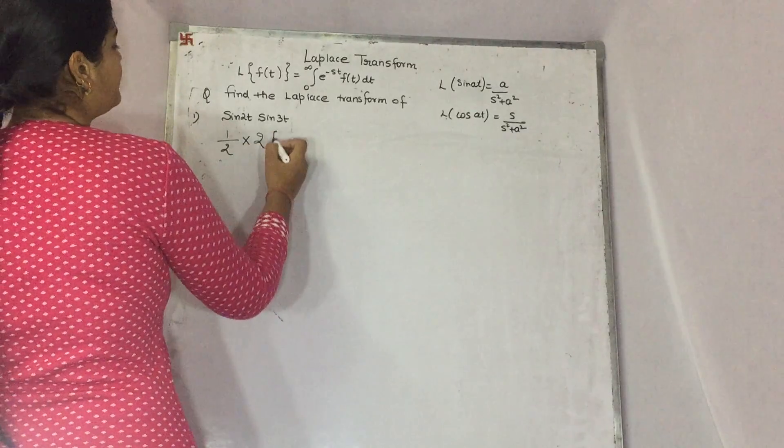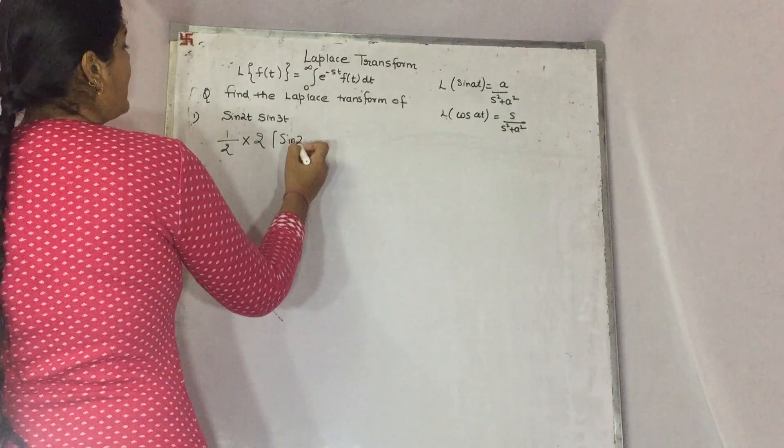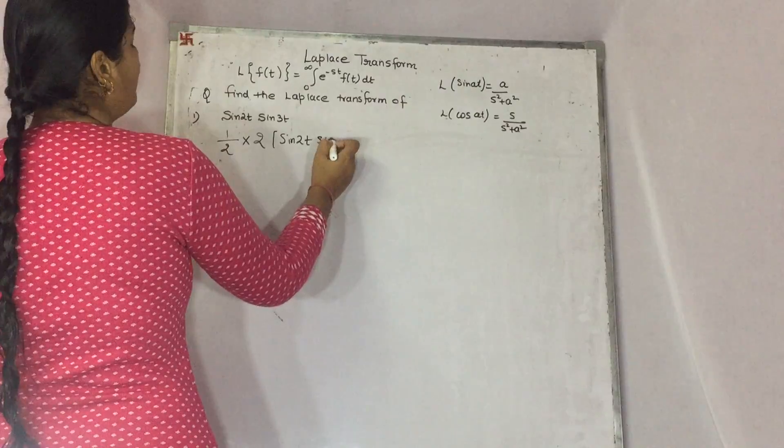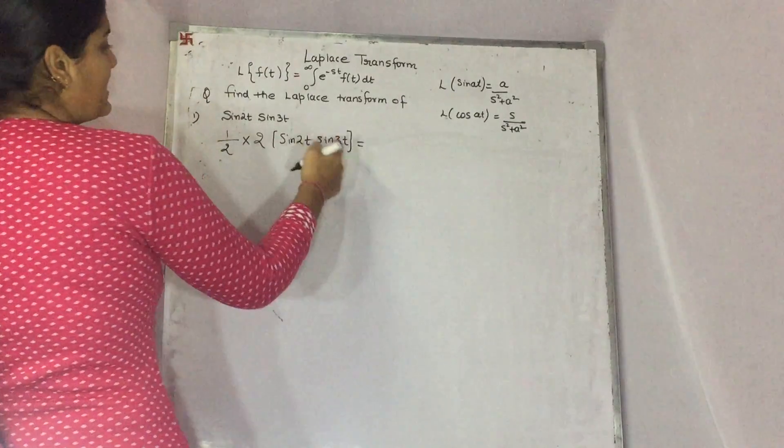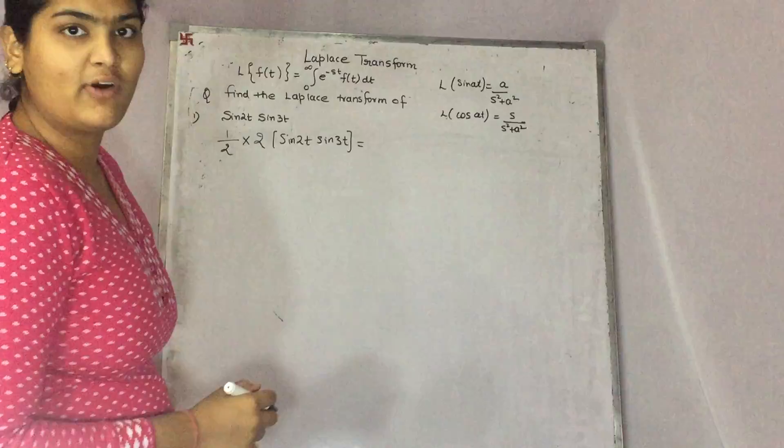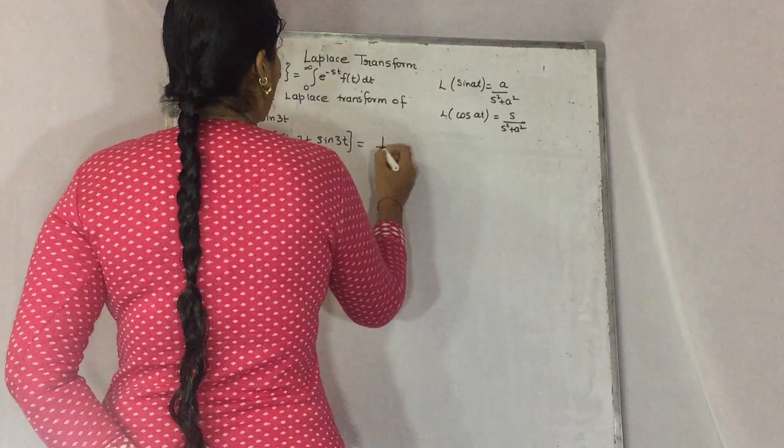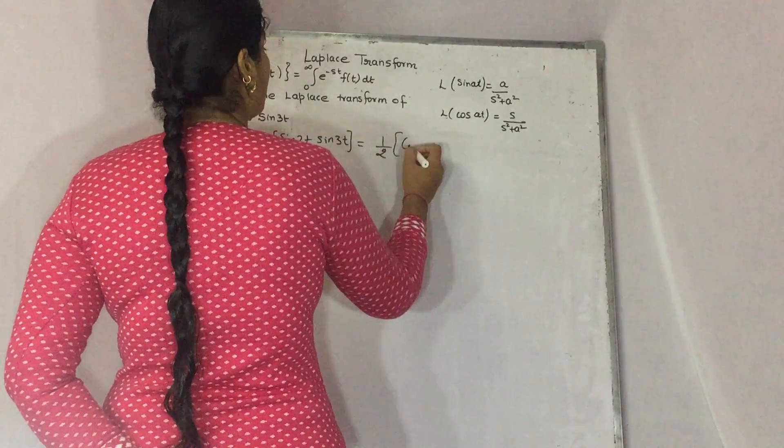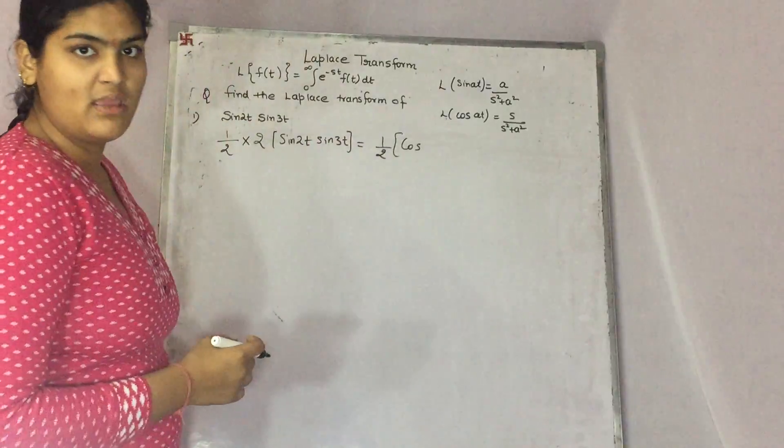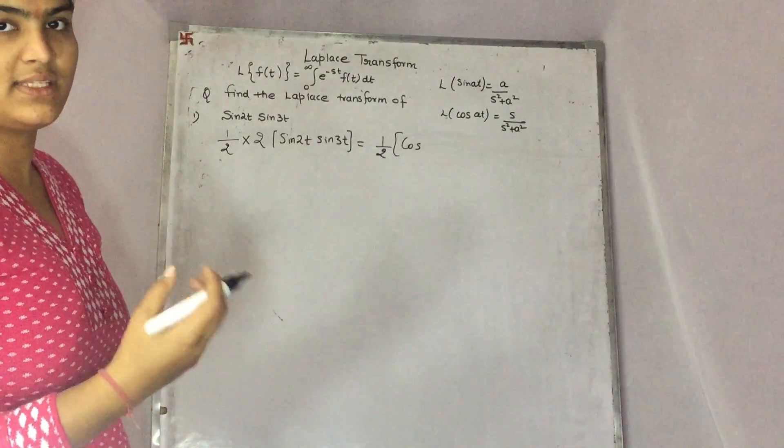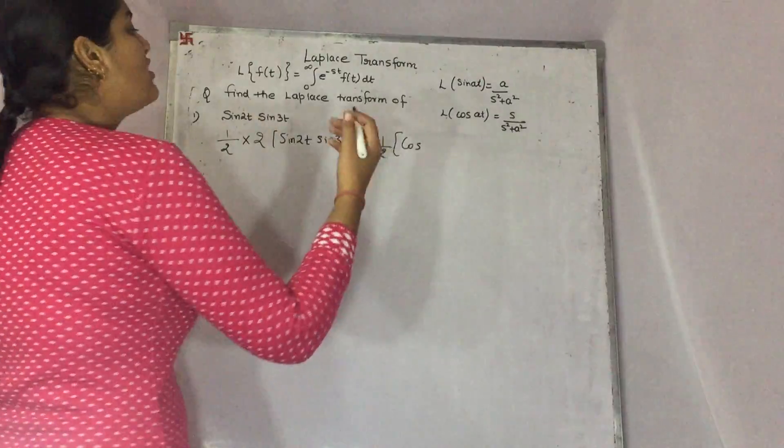This will form 2 sine a sine b. The formula for it is cos a minus b. A minus b is 2t minus 3t, that means minus t. And cos of minus t is also positive minus.